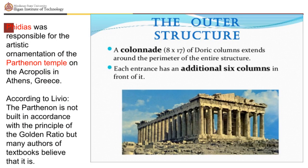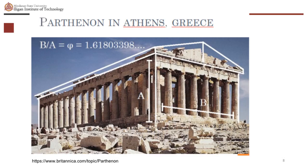According to Livio, the Parthenon is not built in accordance with the principle of the golden ratio, but many authors of textbooks believe that it is. Ancient Greeks thought that rectangles whose sides form a golden ratio were pleasing to look at. Many architects and artists have set their works to approximate the golden ratio, also believing this proportion to be aesthetically pleasing.